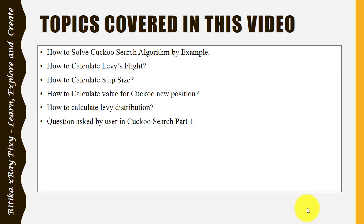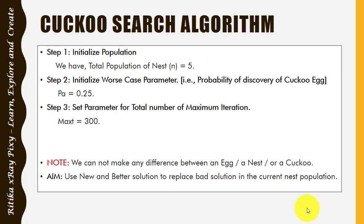We also address questions asked by users in part 1. One thing to mention: whatever calculation is done in this video is my own calculation, and if you find any error please comment below. The simplicity of this algorithm is that we use only two parameters: the total population of the nest, and the probability of discovery of a cuckoo egg, for which the value is 0.25.